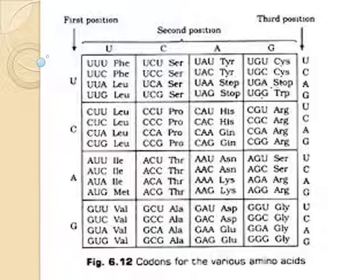One codon codes for only one amino acid, so it is known as unambiguous and specific. For example, CCG codes for proline only and will not code for any other amino acid. Some amino acids are coded by more than one codon — that codon is called a degenerate codon. The codon is read in messenger RNA in a contiguous fashion, meaning sharing a common border or touching, with no gaps.